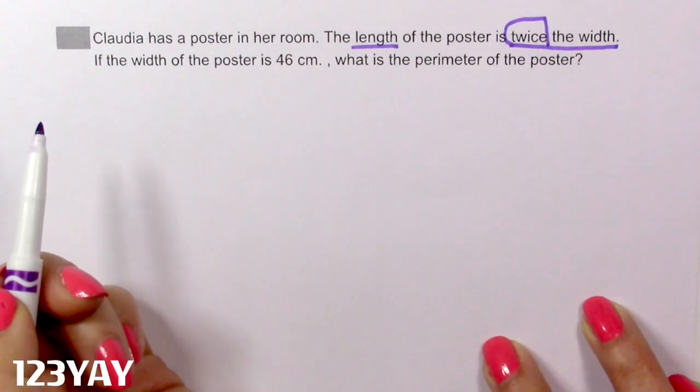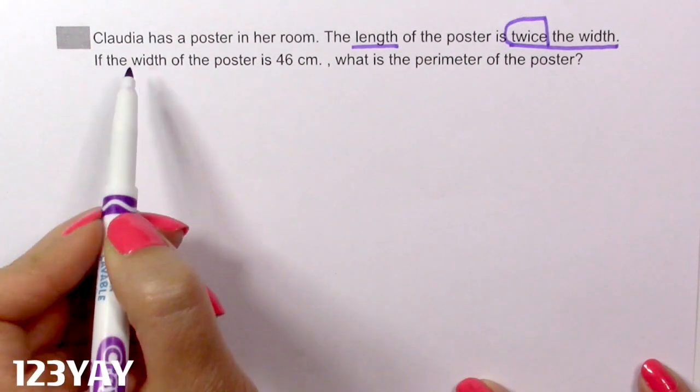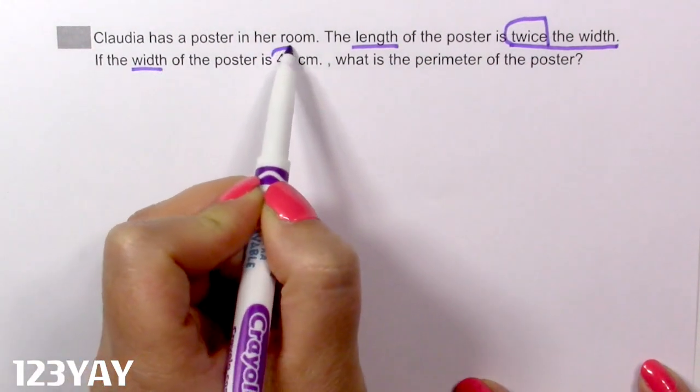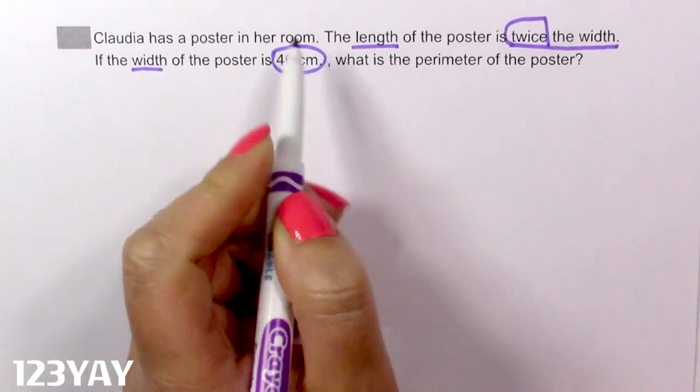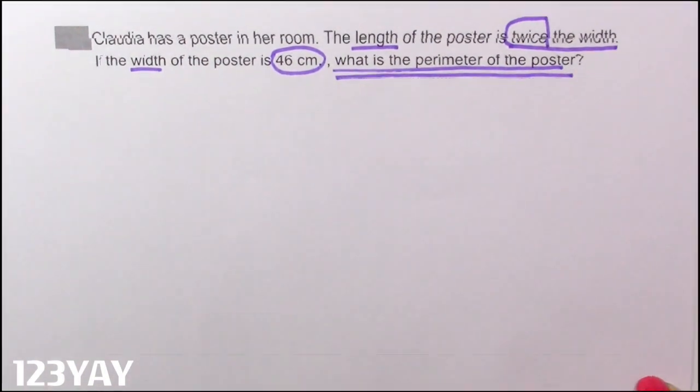Very good, guys. If the width of the poster is 46 centimeters, okay, the width is 46 centimeters, what is the perimeter of the poster? This is what I need to find out.